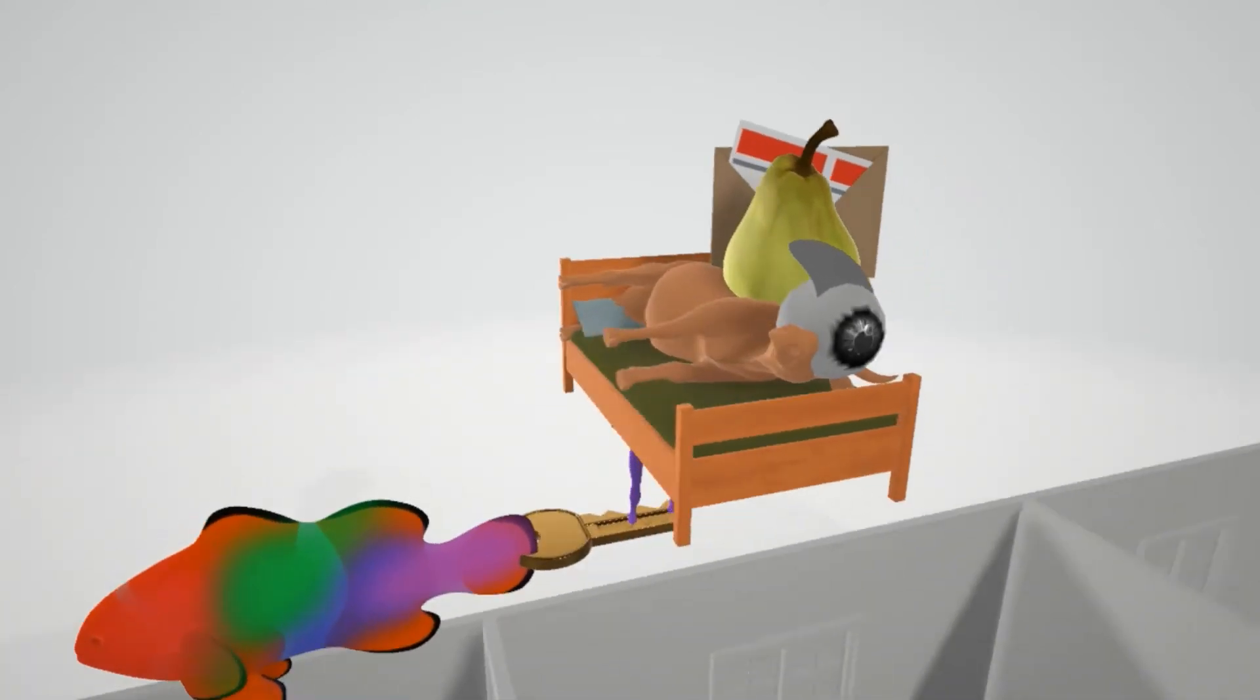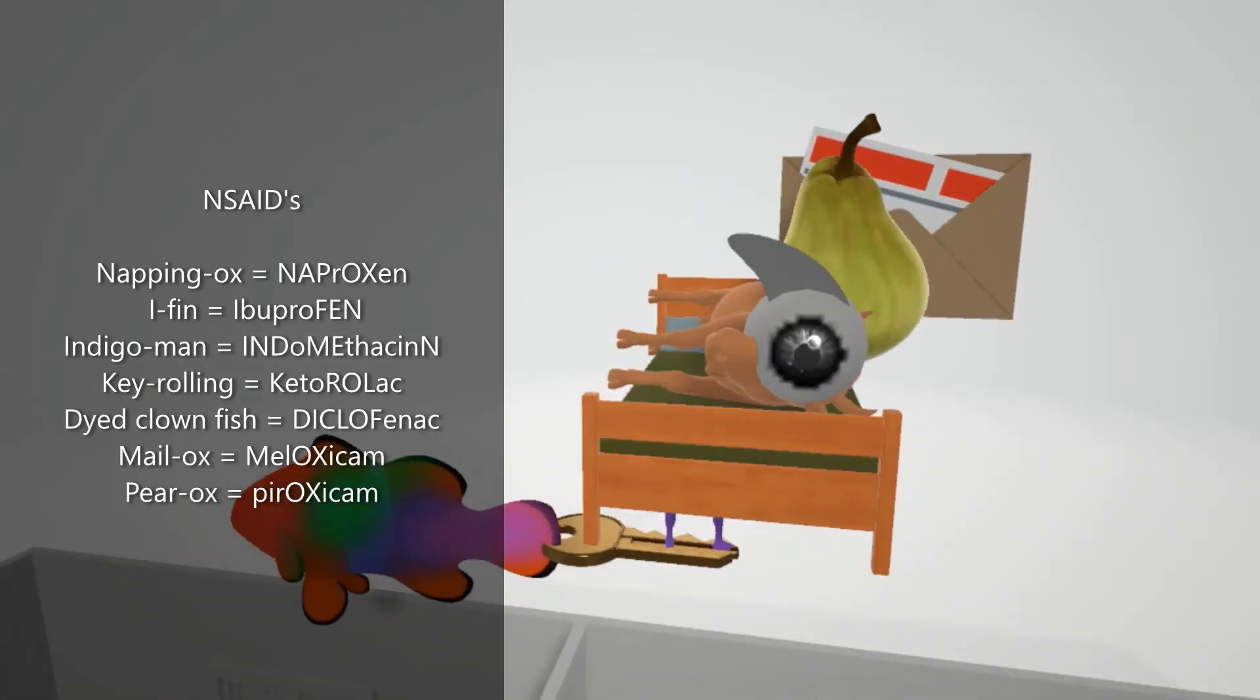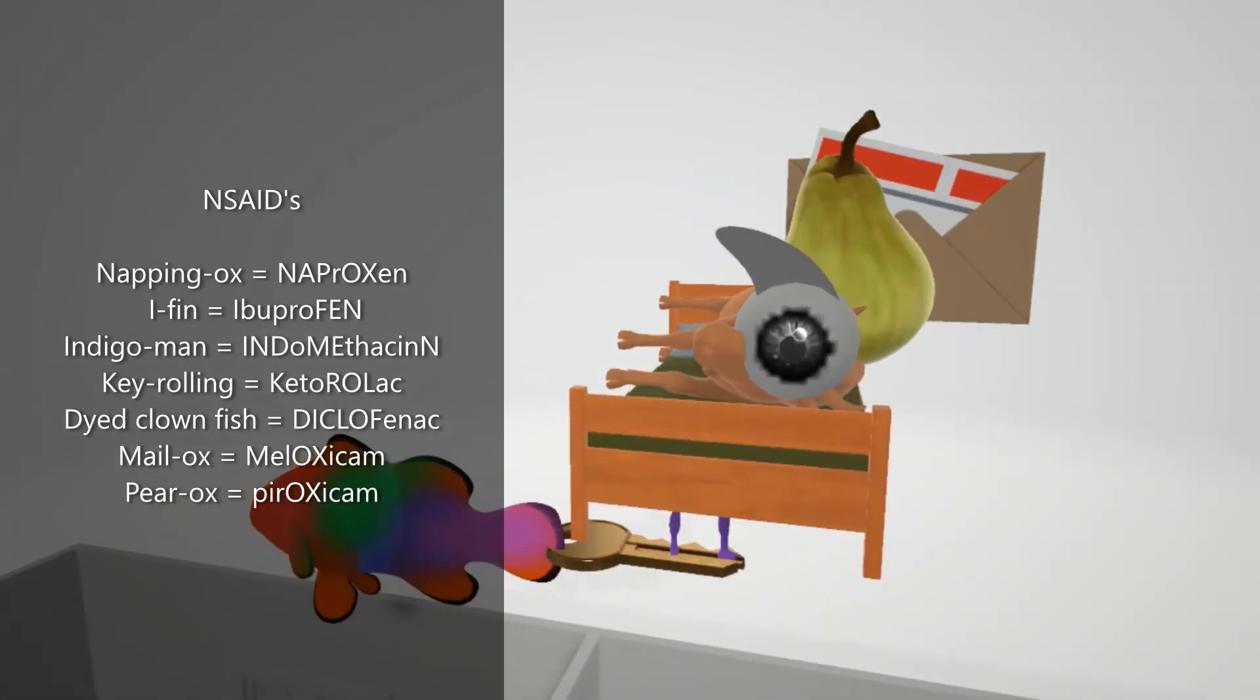The first thing we note is this napping ox over here, the napping ox, napping ox for naproxen. We note that the napping ox has this eye with the fin, eye with the fin for ibuprofen.